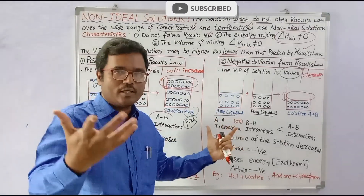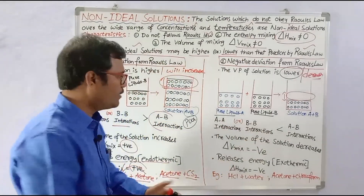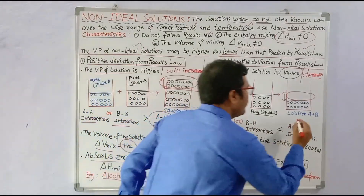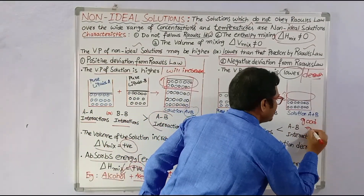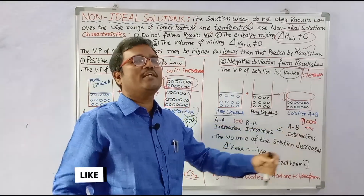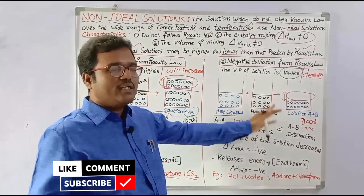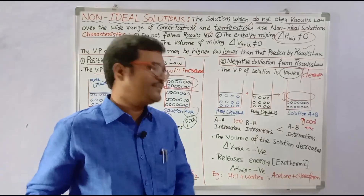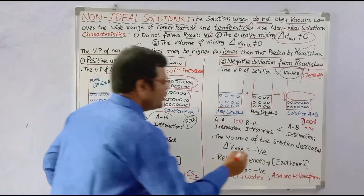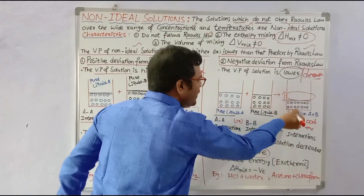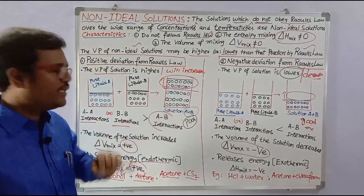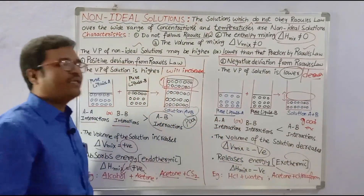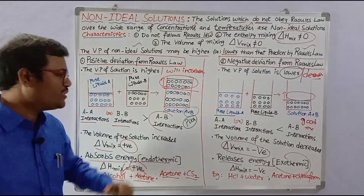In negative deviation, the A-A and B-B interactions are less than A-B interactions — the A-B interactions are excellent. Because of these strong interactions, components cannot evaporate easily, so vapor pressure decreases. The volume of the solution also decreases. The negative deviation releases energy and is always an exothermic reaction, so delta H mix is negative.